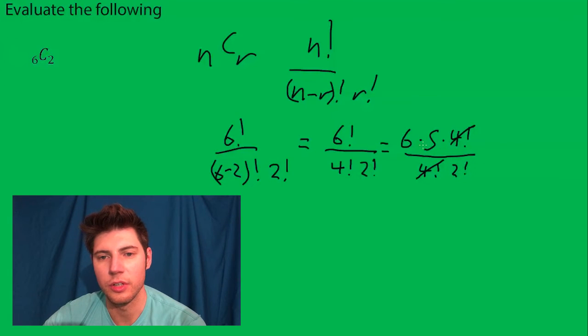And then two factorial is just two so that reduces with my six making it a three. And my answer is fifteen.